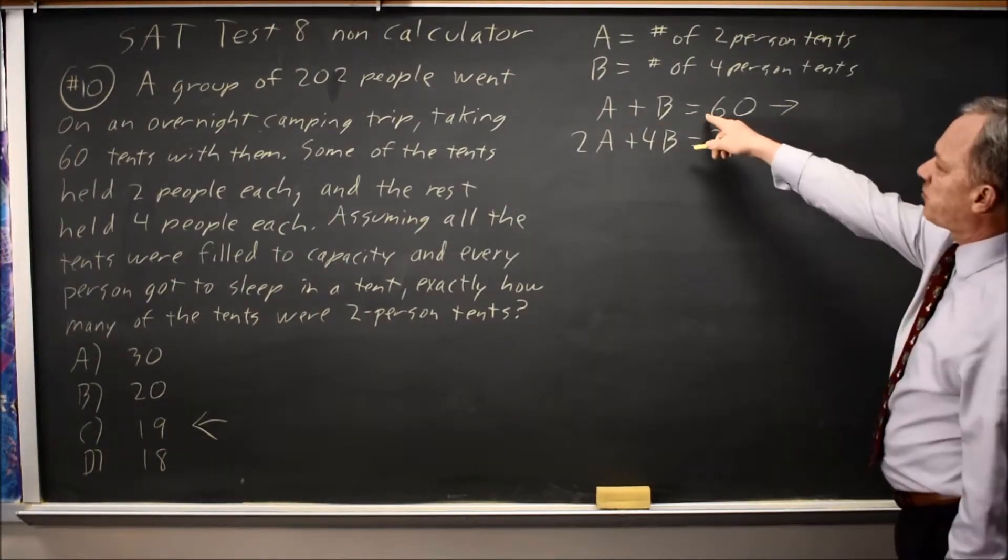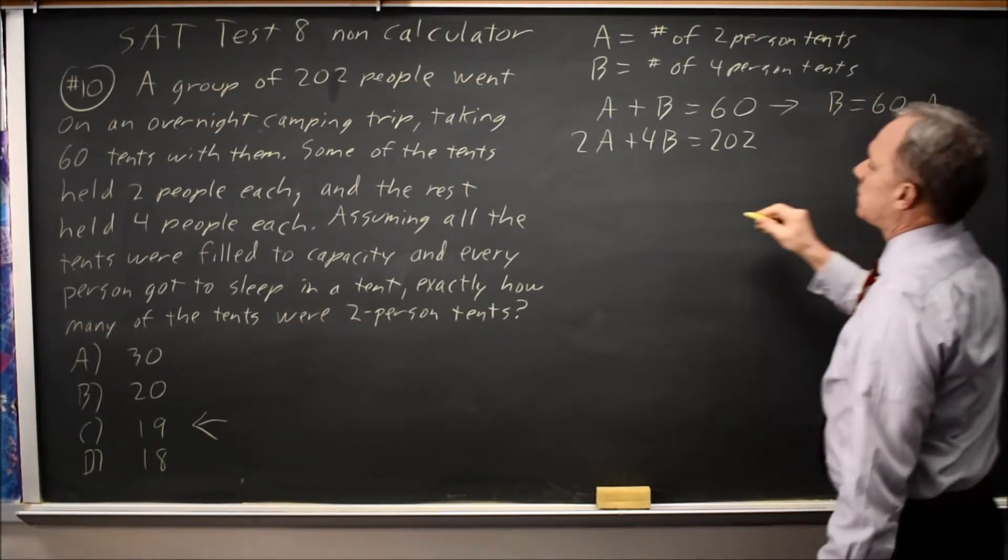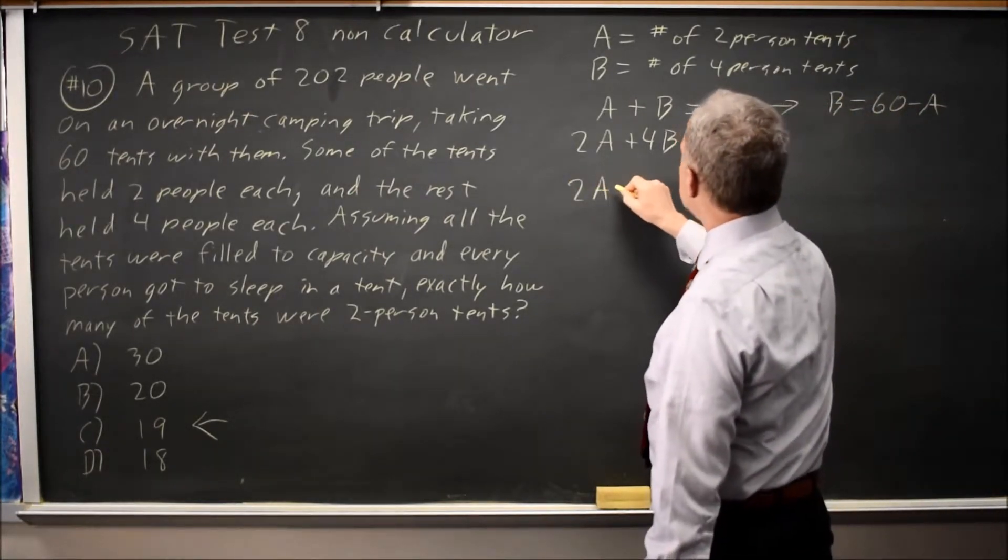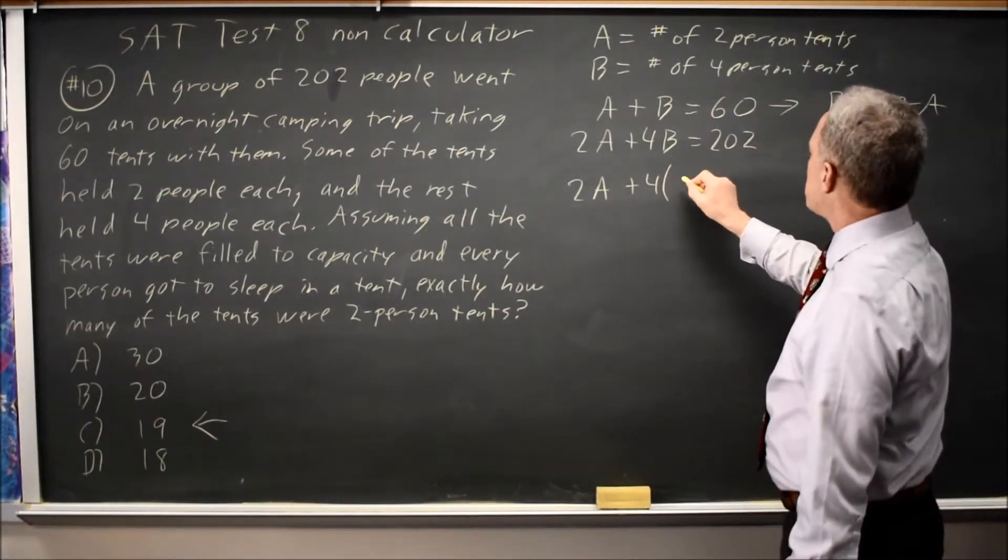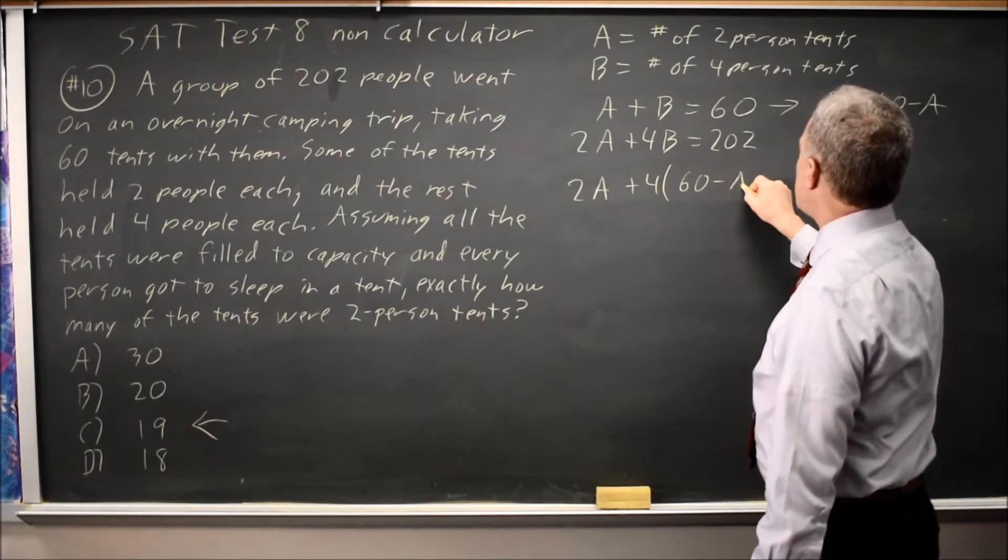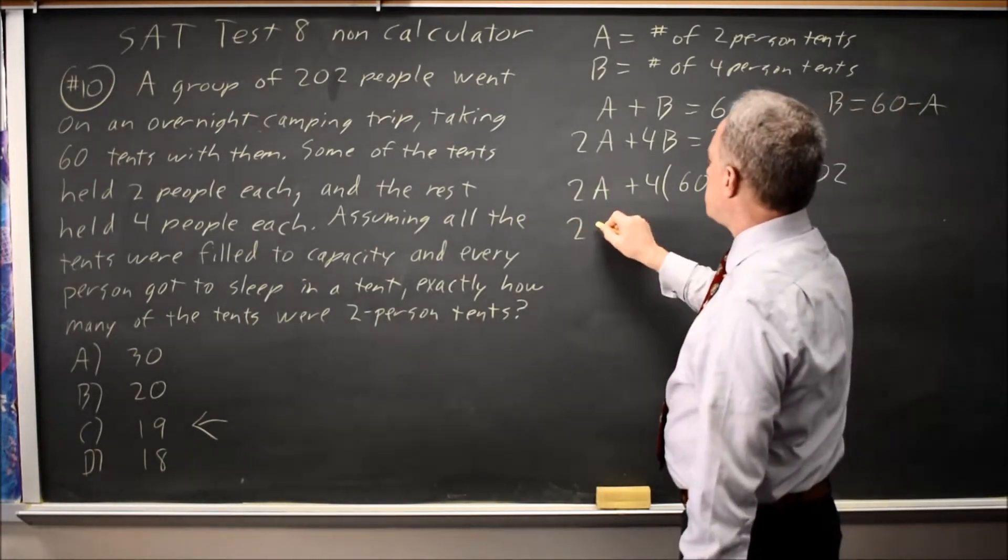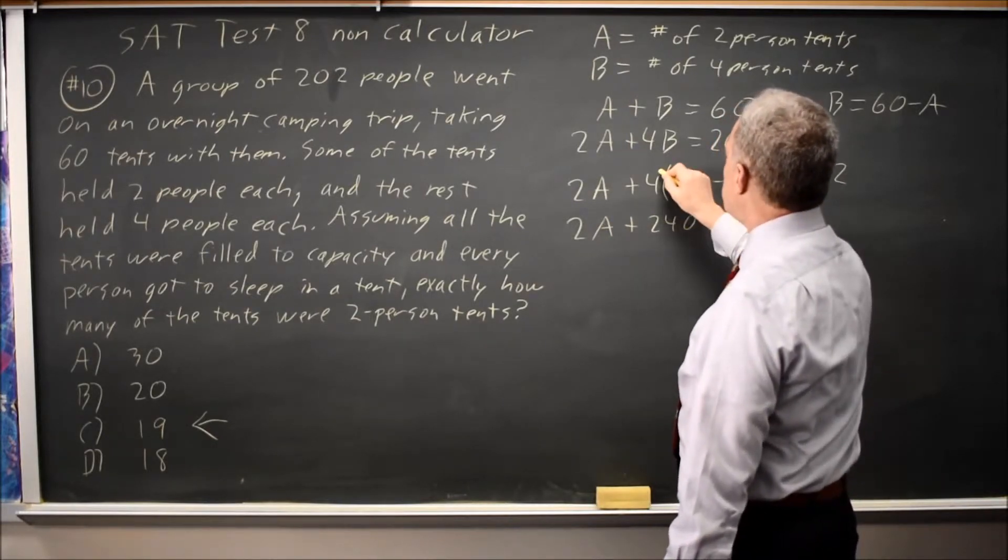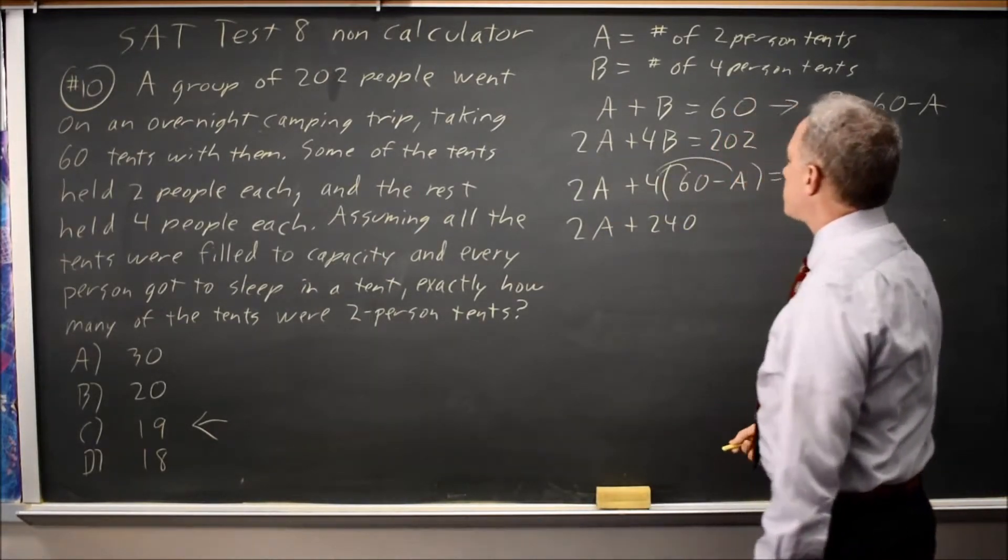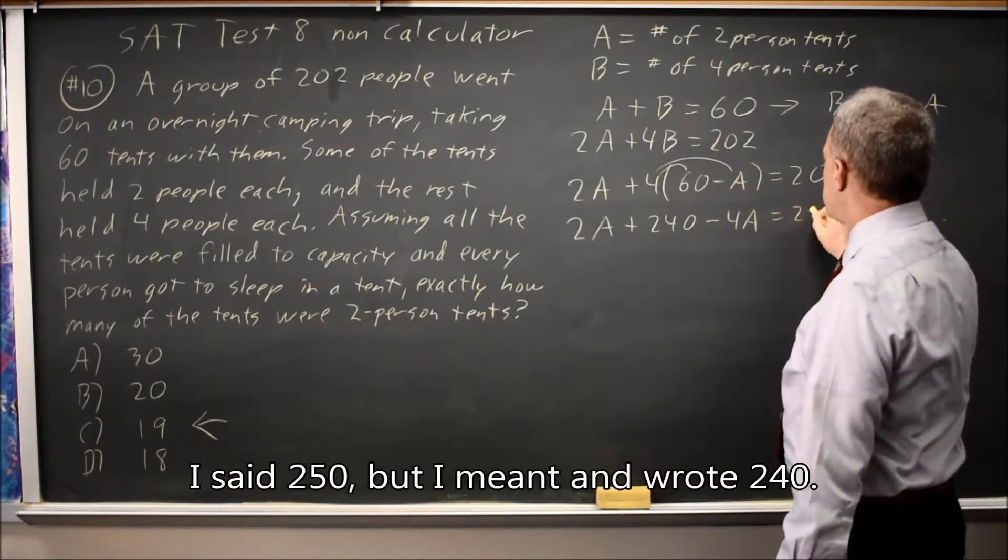If I subtract A from both sides of the first equation, I get B equals 60 minus A. So twice the number of two-person tents plus four times the number of four-person, which is 60 minus A, should be 202. Distributing 2A plus 4 times 60 is 240. Make sure you distribute the four to both terms. 240 minus 4A equals 202.